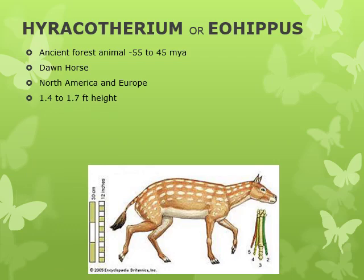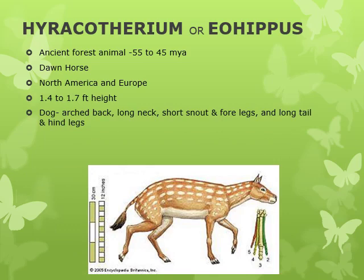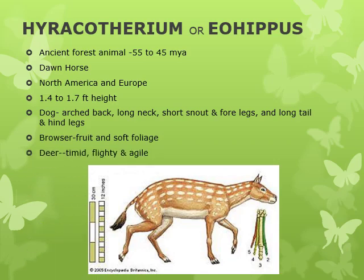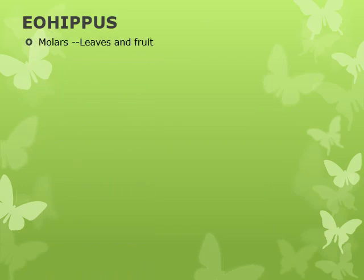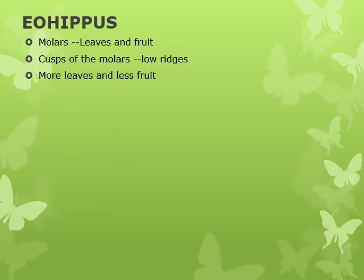Eohippus stood about 1.4 to 1.7 feet in height. It resembled a dog because of its arched back, long neck, short snout, short forelegs, long tail, and long hind legs. It browsed on fruit and soft foliage, and resembled a deer in being timid, flighty, and agile. The molars of Eohippus were suitable for eating leaves and fruit, with cusps somewhat connected in low ridges. During its 20-million-year lifespan, it gradually started eating more leaves and less fruit. The primary evolutionary changes were in dentition only.